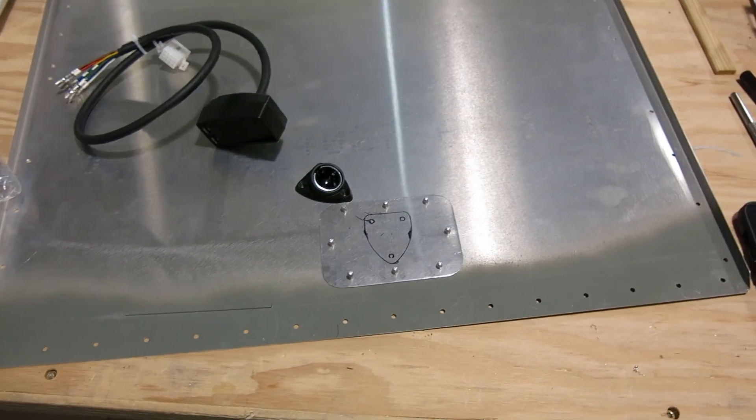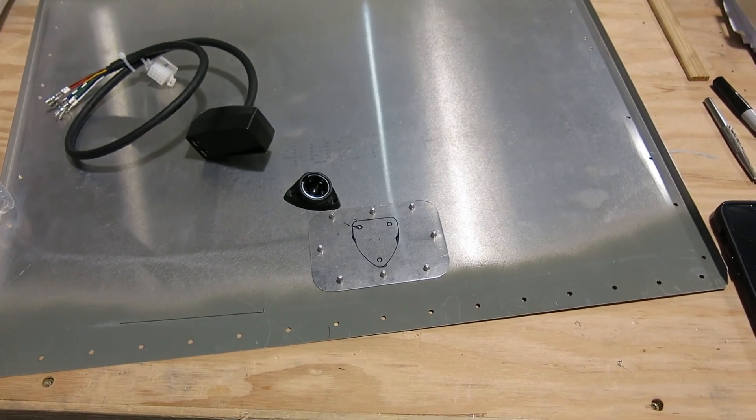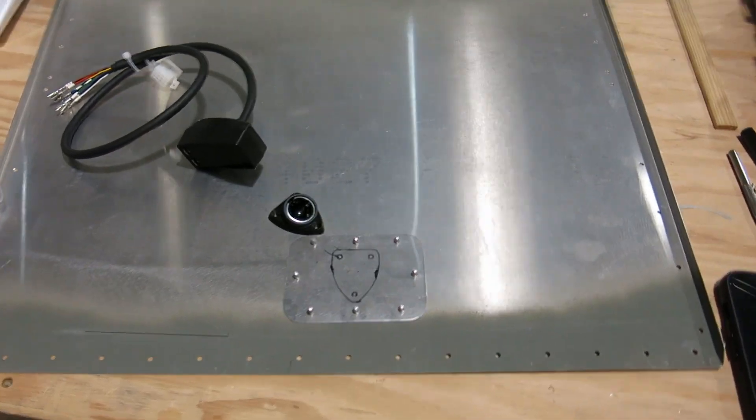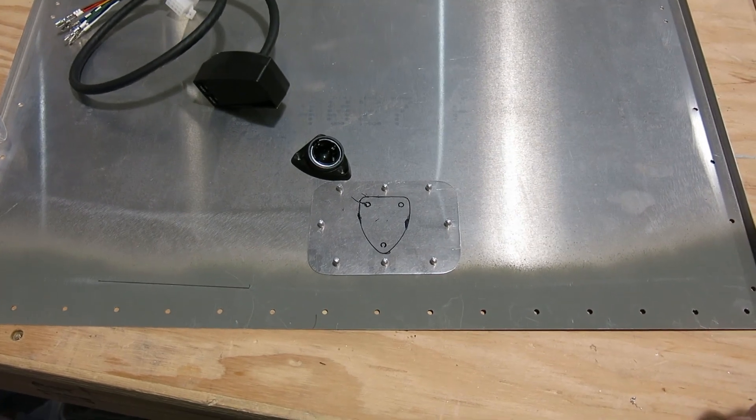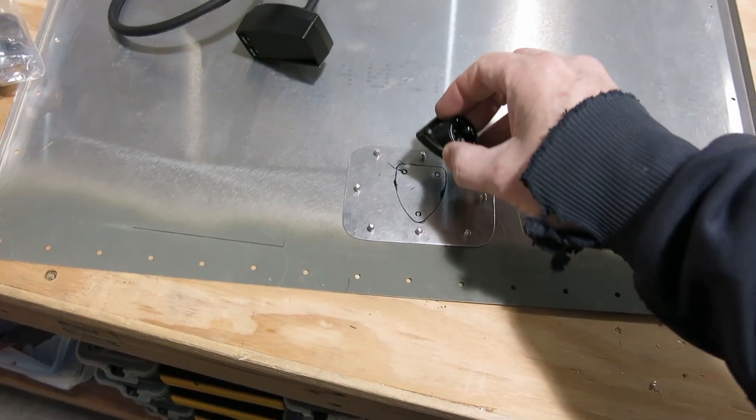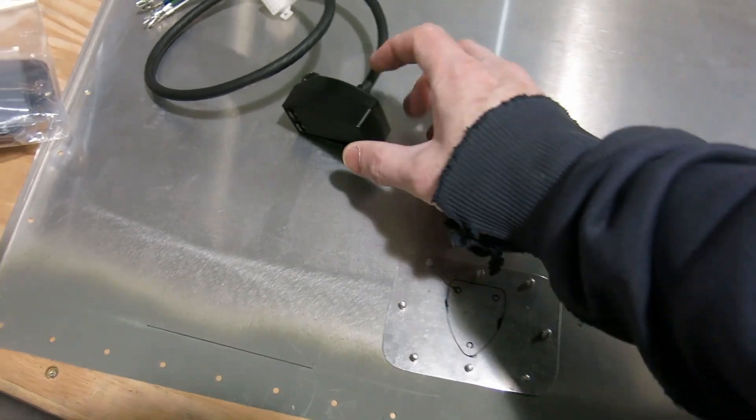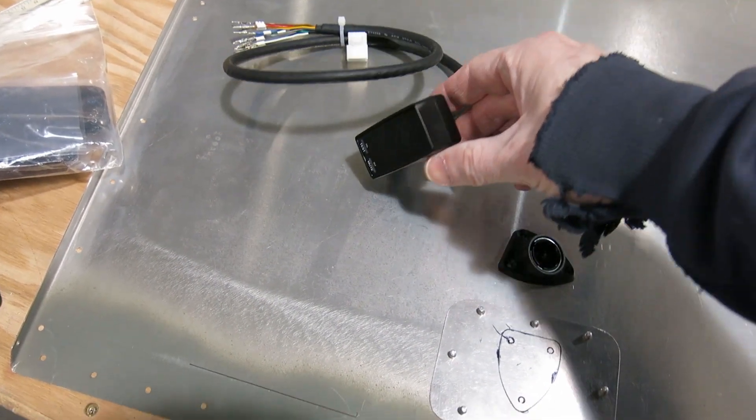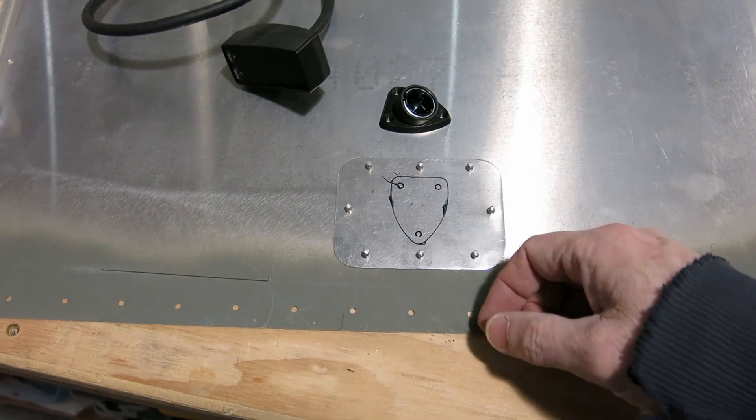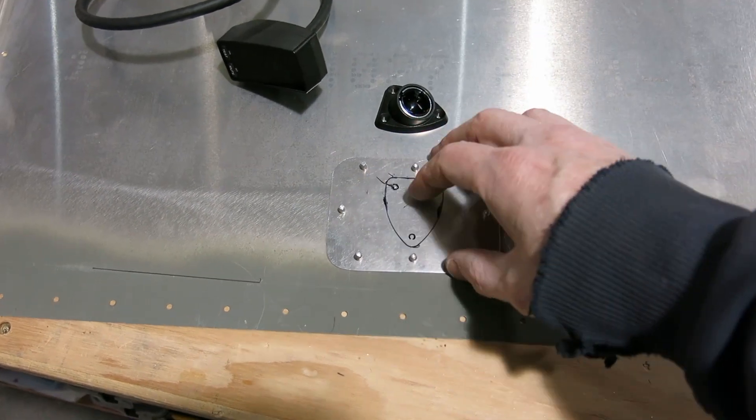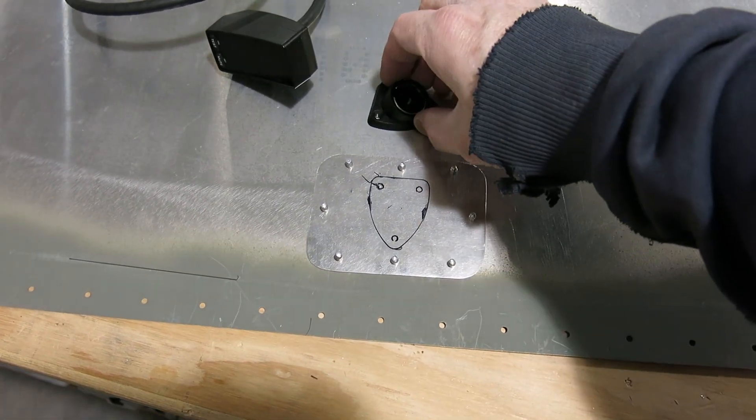All right, wrapping it up for today. A little bit of hit and miss on the video here. We kind of got rolling on a few things and I didn't quite get to the camera. But I've got this mount here. This is going to go on the top of the dash. This is a mount for the AOA indicator. I've got an external AOA indicator here, and that's going to be on the top. So I decided to put a little doubler plate in here for this.